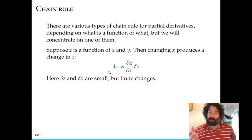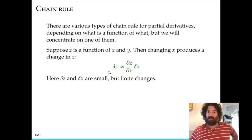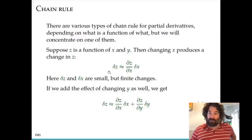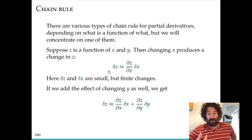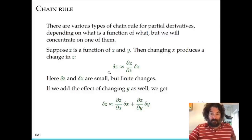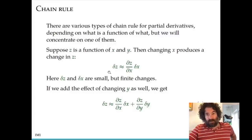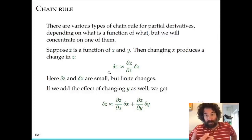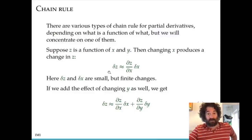For a small finite change, it's a linear approximation. Now if we also change y — adding the effect of possibly also changing y by some small amount delta y — then the change in z in the linear approximation is given by this formula: we simply have the change resulting from the change in x plus the change resulting from the change in y, which is dz/dy times delta y.